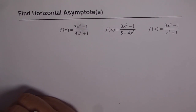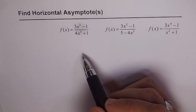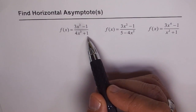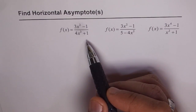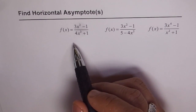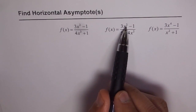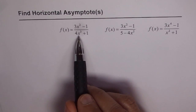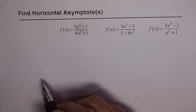A rational function is a ratio of two polynomials — a polynomial in the numerator and a polynomial in the denominator. A polynomial has a degree, which is the highest power. For example, the degree of the numerator here is two, here it is two again, and here the degree is four. The denominator degrees are three, two, and two respectively for these functions.